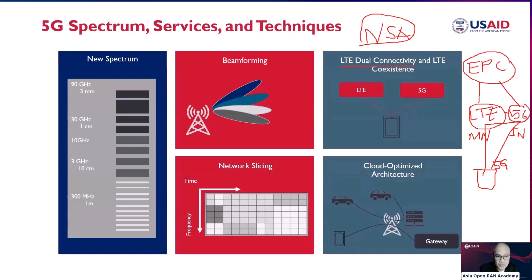So if you look at your phone right now and it is a 5G-capable device showing a 5G logo, your phone is actually connected to both LTE and 5G at the same time. We call this dual connectivity, or ENDC. That is one of the key techniques currently in use.